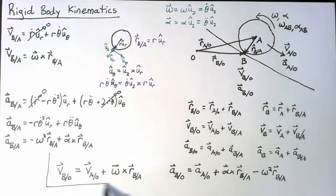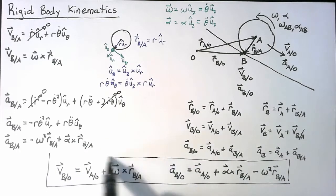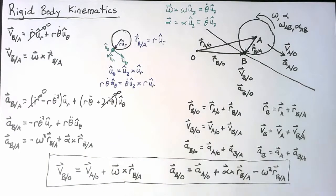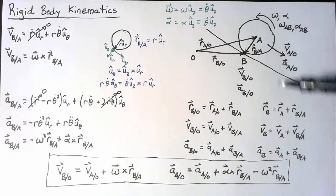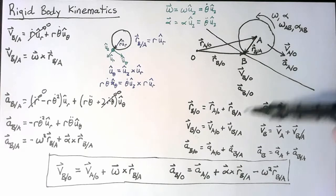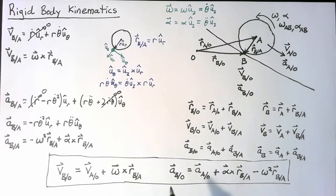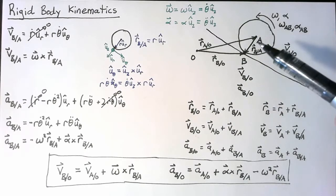When it comes to rigid body kinematics, there are two equations you need to know. They allow you to connect multiple points in a complex dynamics system. If we know the positional relationships between various points, we can derive relationships for velocities and accelerations based on the angular velocity and acceleration of the bodies in the system.